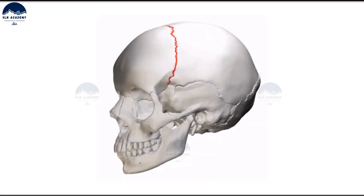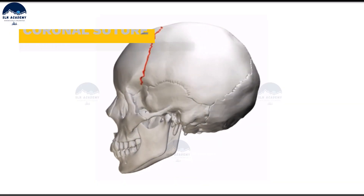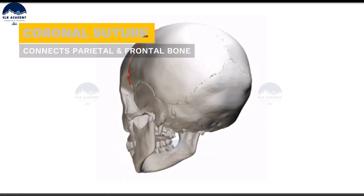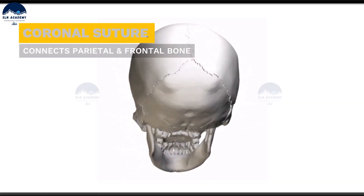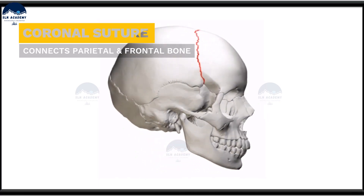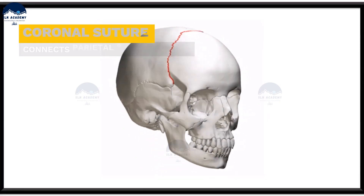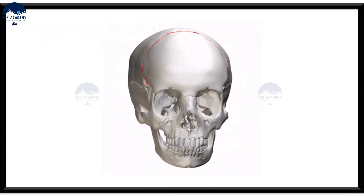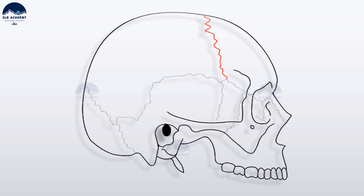The coronal suture connects the frontal bone with the two parietal bones. It is a dense fibrous connective tissue joint that separates the two parietal bones from the frontal bone of the skull.